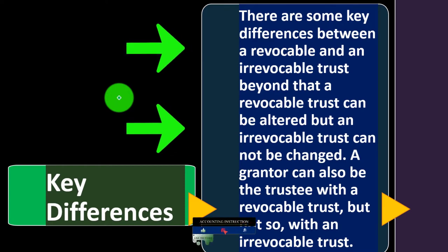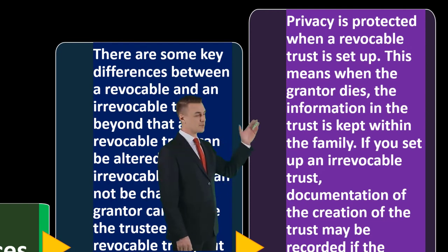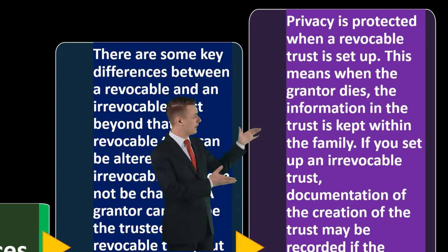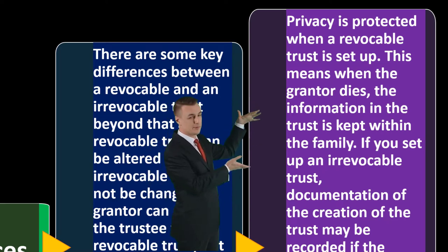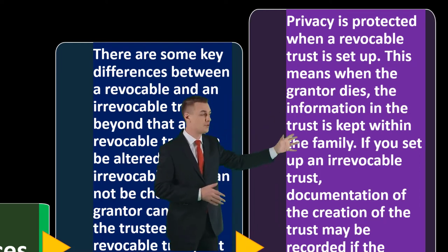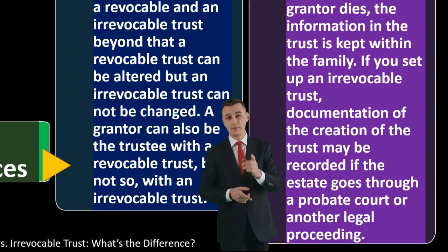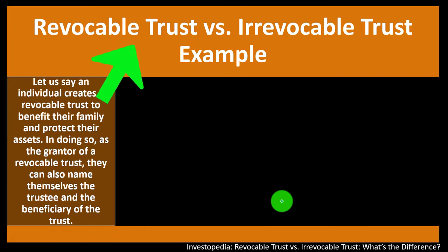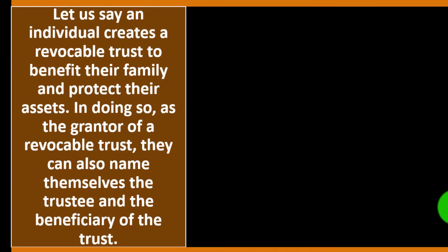Key differences: a revocable trust can be altered, but an irrevocable trust cannot. A grantor can also be the trustee with a revocable trust, but not with an irrevocable trust. Privacy is protected with a revocable trust — when the grantor dies, information in the trust stays within the family. With an irrevocable trust, documentation of the trust's creation may be recorded if the estate goes through probate court or another legal proceeding.